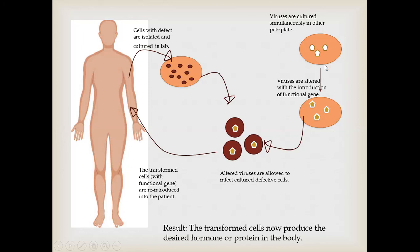These viruses are then altered with the introduction of the functional gene. Once these viruses become altered, they are allowed to infect these defective cultured cells. These defective cultured cells upon infection become transformed with the functional gene and are reintroduced into the patient. As a result, the transformed cells now produce the desired hormone or protein in the body.